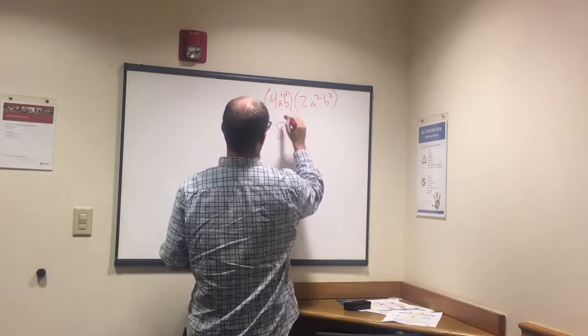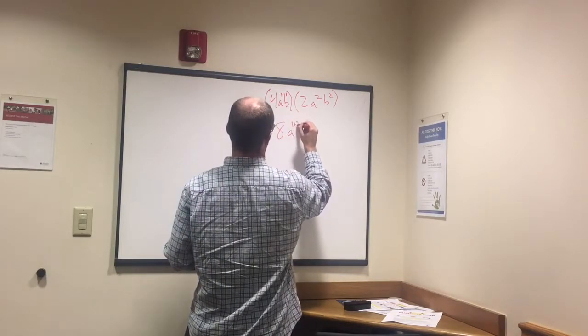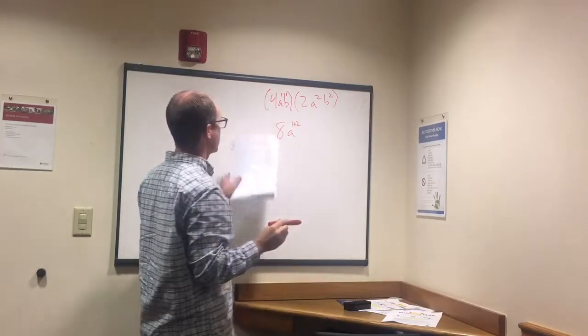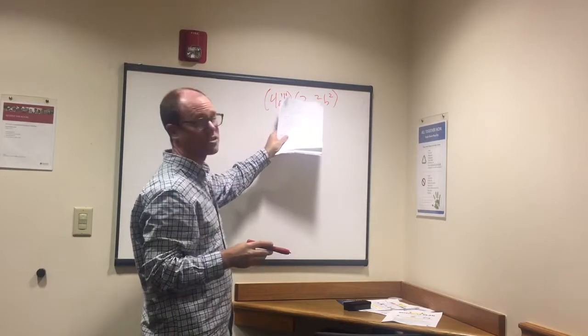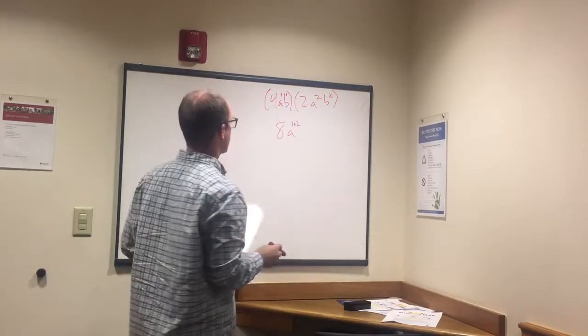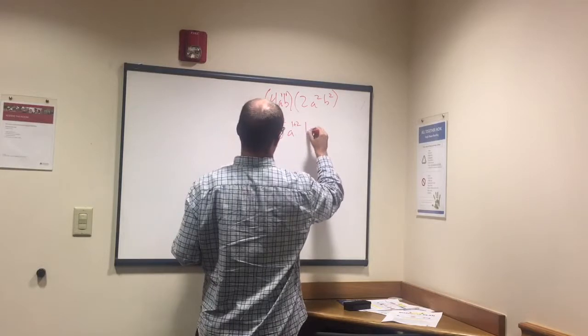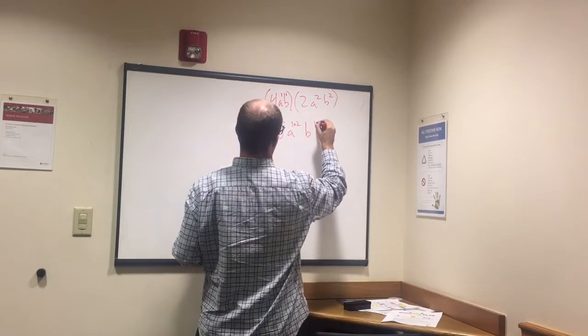of course it's 3. We just added the 1 which is the exponent for the a here and the 2 which is the exponent for the a over here. And b also to the 1 plus 2.